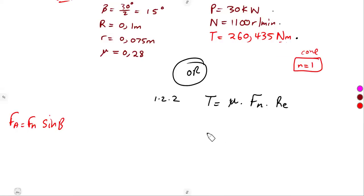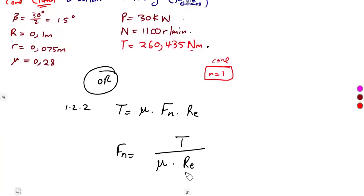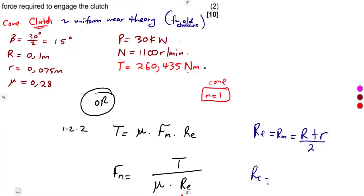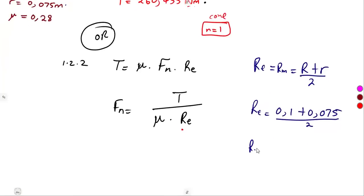Calculate the normal force. The normal force equals torque over coefficient of friction times effective radius. We need to calculate the effective radius. Since we are dealing with uniform wear theory for an old clutch, the effective radius equals the mean radius — the average of outer and inner radii. So: (0.1 + 0.075) ÷ 2, giving an effective radius of 0.0875 m.